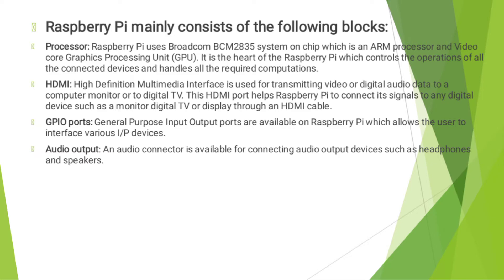Raspberry Pi mainly consists of the following blocks. The first one is the processor. Raspberry Pi uses the Broadcom BCM2835 system-on-chip, which is an ARM processor and VideoCore graphics processing unit (GPU). It is the heart of the Raspberry Pi, controlling the operations of all connected devices and handling all record computations.